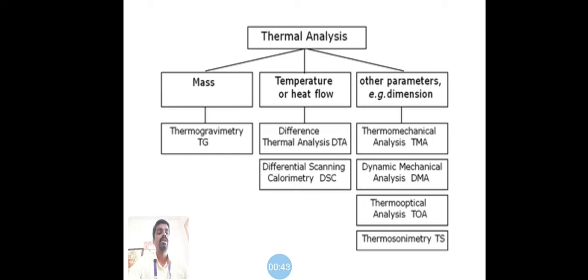For mass, we have thermogravimetry (TG). Using temperature or heat, we have two different methods: differential thermal analysis, shortly called DTA, and differential scanning calorimetry (DSC). For other dimensional parameters, we use thermomechanical analysis, dynamic mechanical analysis, and thermoptical analysis.